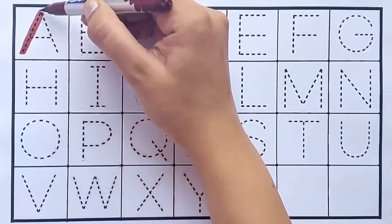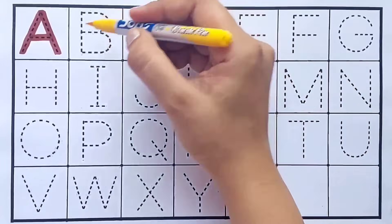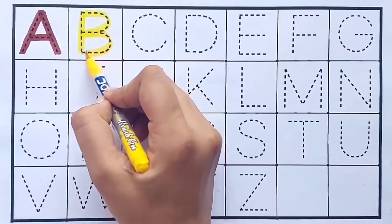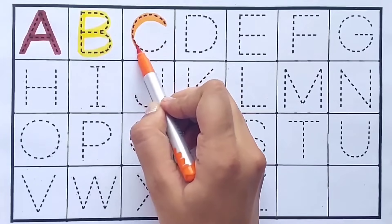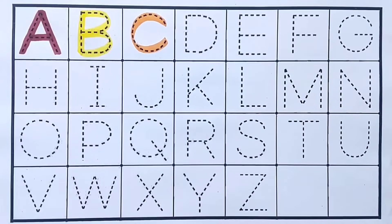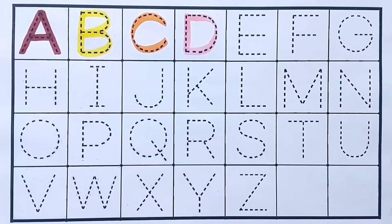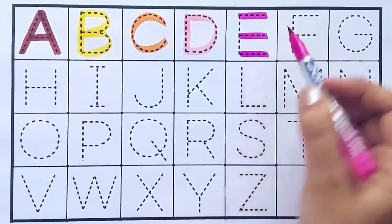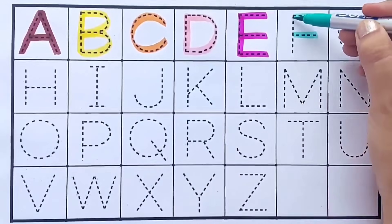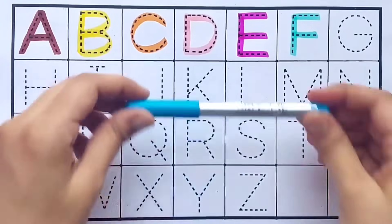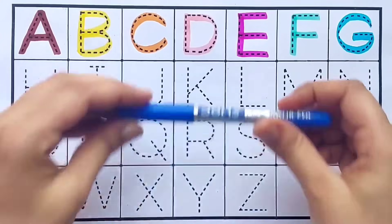A. A for apple. Yellow color. B. B for boy. Orange color. C. C for cow. Light pink color. D. D for duck. Pink color. E. E for elephant. Sea green color. F. F for frog. Sky blue color. G. G for grapes. Blue color.